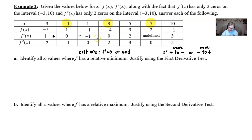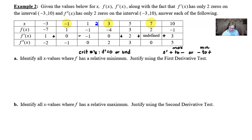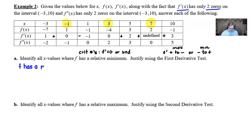Looking at the first derivative row: around negative 1, f' goes from positive to negative — that's a max, so we don't use it for the min. Around x equals 3, f' goes from negative to positive — exactly what we want for a min. Around x equals 7, f' is positive on both sides of the undefined point. And note: because f' has only two zeros, the intermediate value theorem guarantees no hidden sign changes exist.